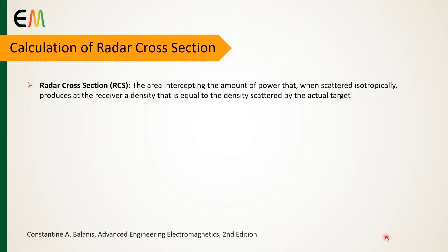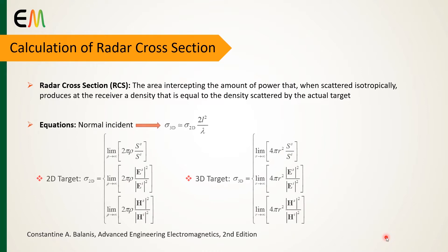The echo area or RCS is defined as the area intercepting the amount of power that, when scattered isotropically, produces at the receiver a power density equal to the density scattered by the actual target. In equation form, the two-dimensional and three-dimensional RCS of a target take the form of these equations.